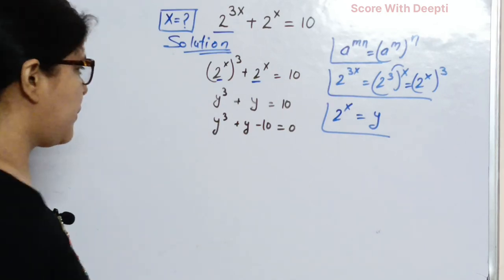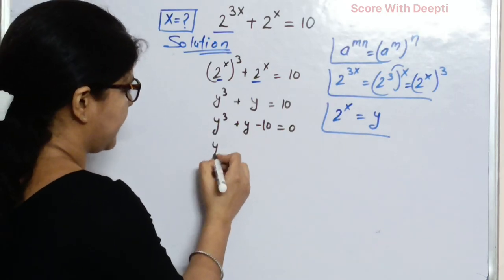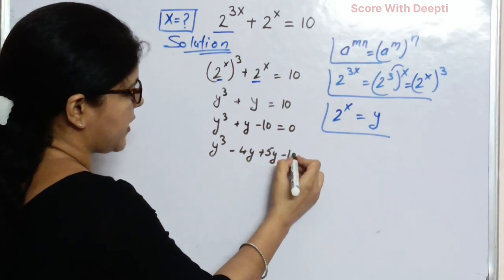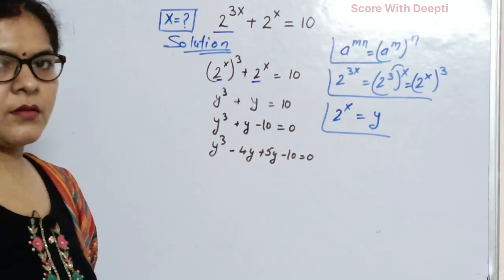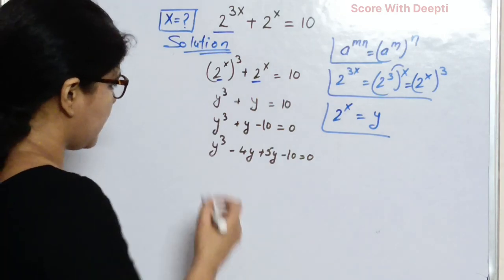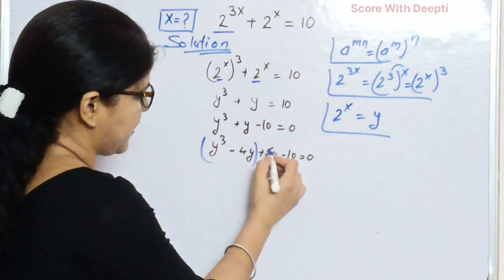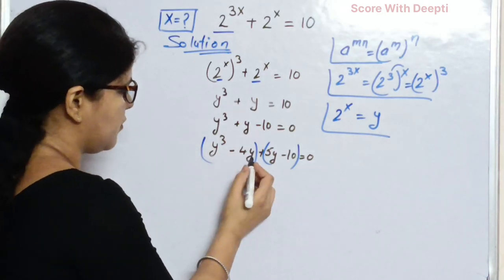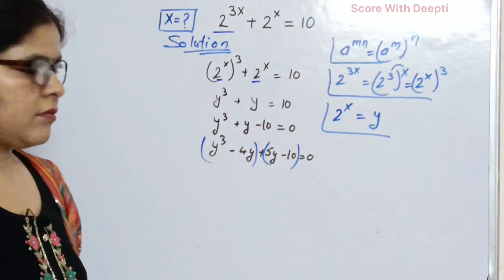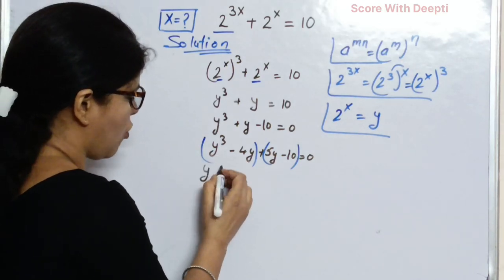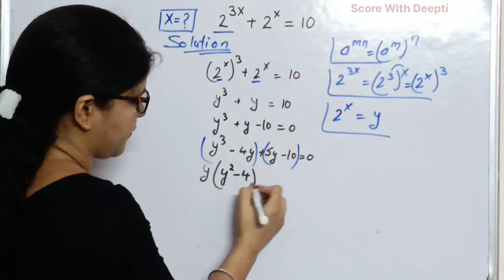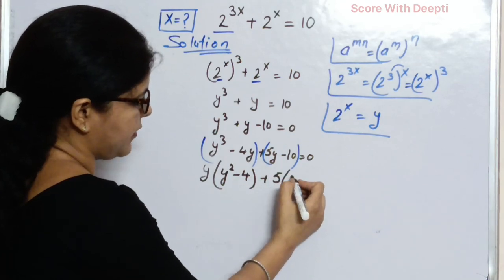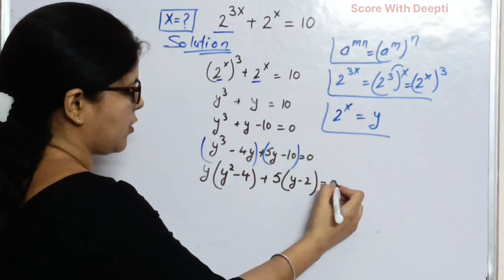Next, move 10 to the left hand side and write y cubed plus y minus 10 equal to 0. In place of y, we can write y cubed minus 4y plus 5y minus 10 equal to 0. Here we put the first two terms in a bracket and the last two terms in a bracket. Next, we take y as common and write y squared minus 4, plus we take 5 as common and write y minus 2, equal to 0.